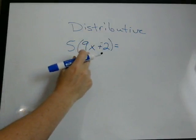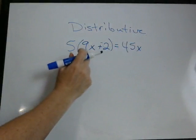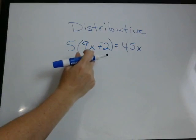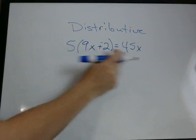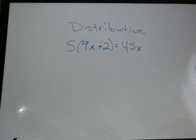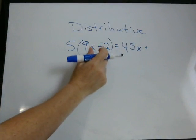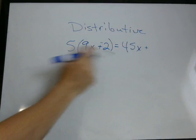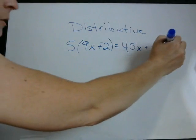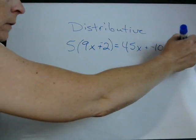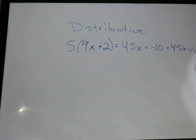5 times 9x is 45x. Remember when you have a number beside your variable, it just means multiplication. So 9 times x. 5 times 9x is 45x. You just multiply the numbers together. Plus 5 times negative 2. Remember we changed this to a negative. So 5 times negative 2 is negative 10. When you're adding a negative, you're just subtracting. So it's 45x minus 10.